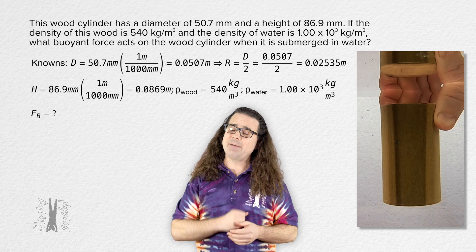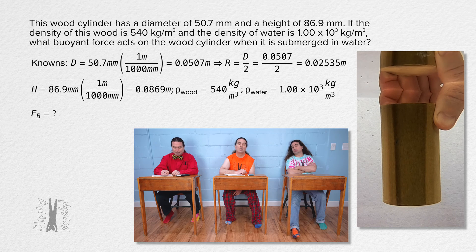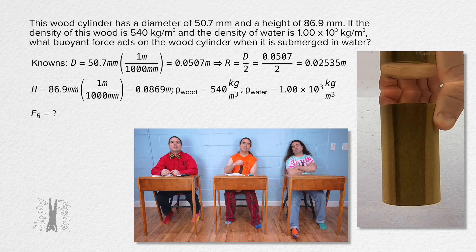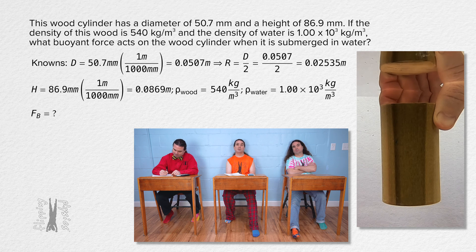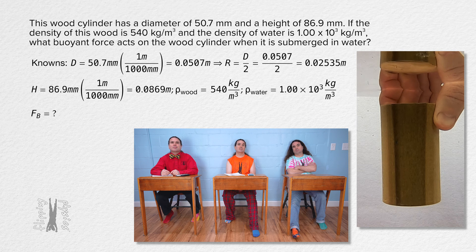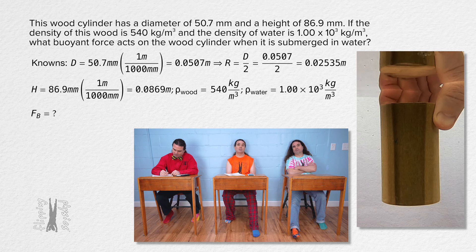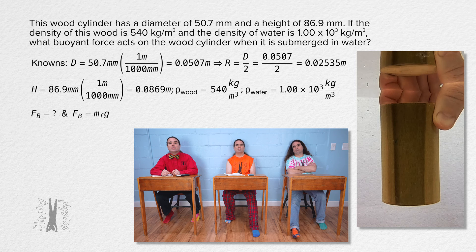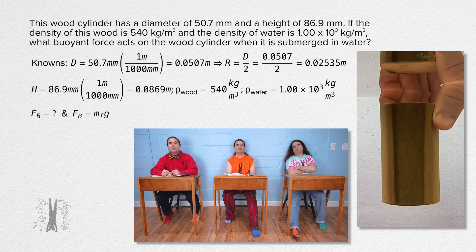Well done. Bobby, please begin solving the problem. We know buoyant force equals the weight of the fluid displaced by the object, or the force of gravity acting on the fluid displaced by the object. So that equals the mass of the fluid displaced by the object times the gravitational field strength. But we do not have the mass of anything. Instead, we have densities.